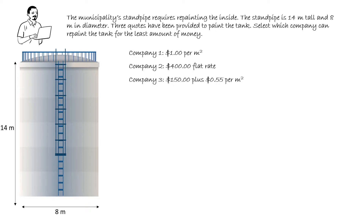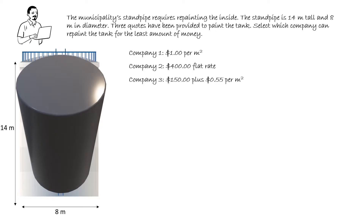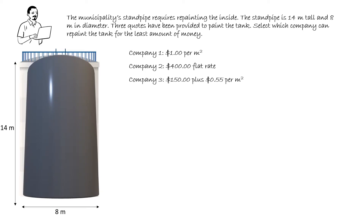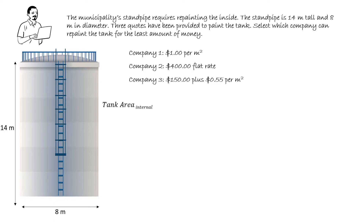In order to calculate the total cost, we have to figure out the surface area of the inside of the tank. The tank is comprised of three shapes: a circle for the top, a circle on the bottom, and the sidewalls. The total internal surface area is a summation of those three areas — the surface area of the top, the surface area of the bottom, and the surface area of the sidewall.